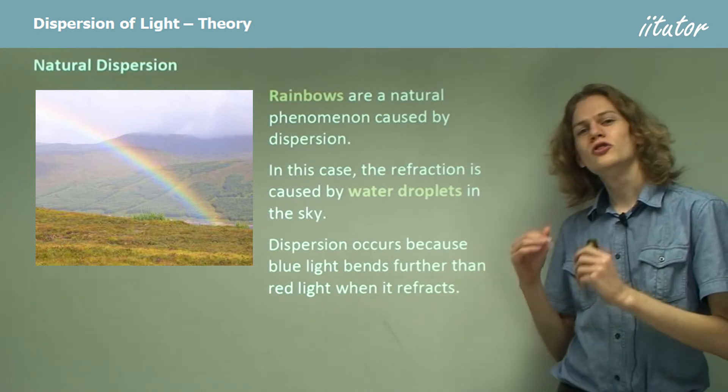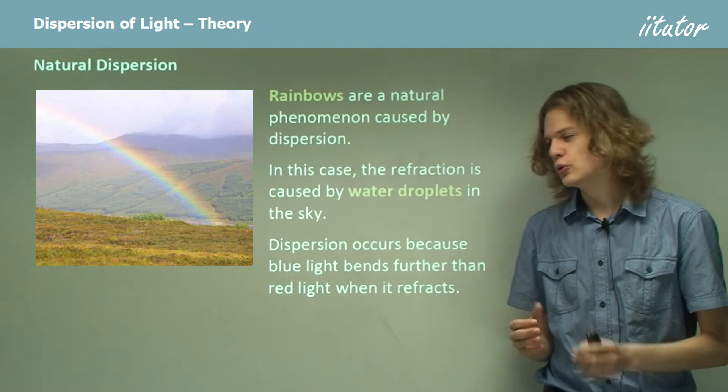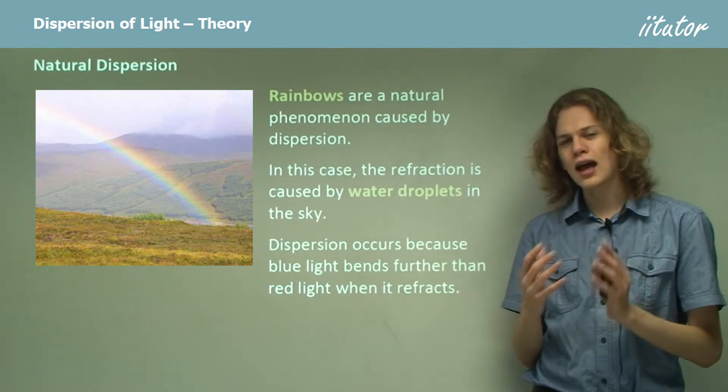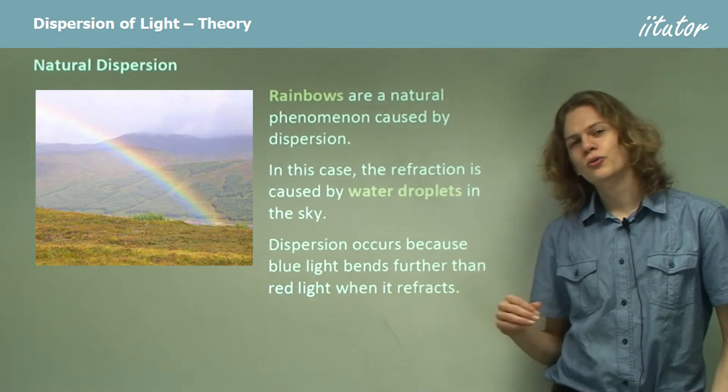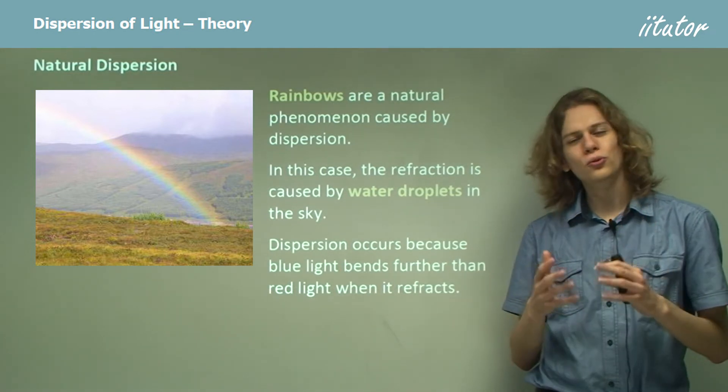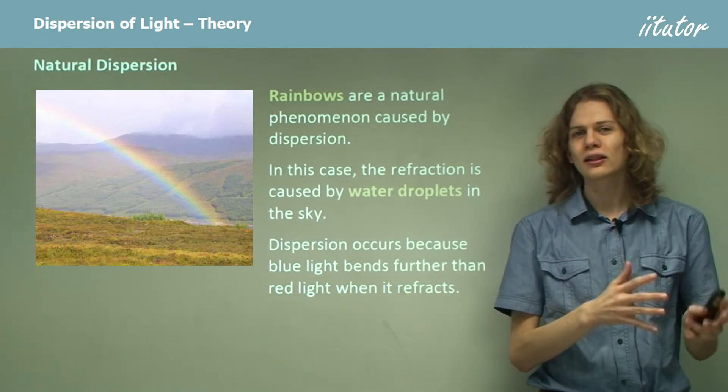So dispersion occurs because the blue light and the red light, and all the different colors of light in between those two, will diffract at slightly different angles. In particular, the blue light will bend further than the red light. So the refractive index for blue light in water is higher than the refractive index for red light in water.